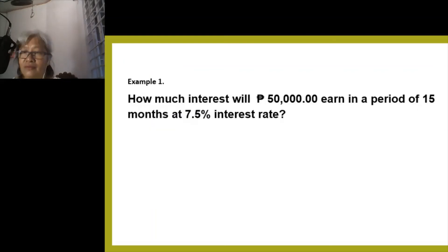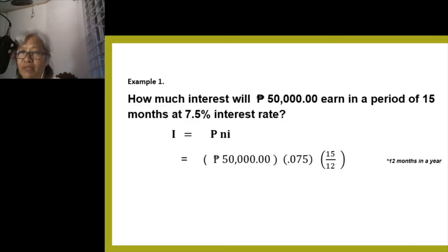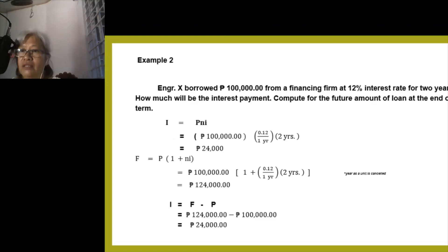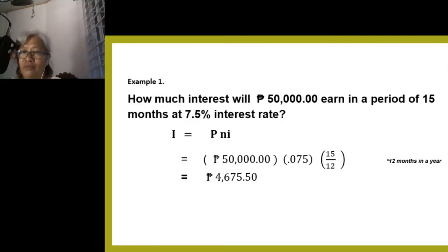Another example: how much interest will $50,000 earn in a period of 15 months at 7.5% interest rate? Applying the formula, the interest is equal to $4,675.50.